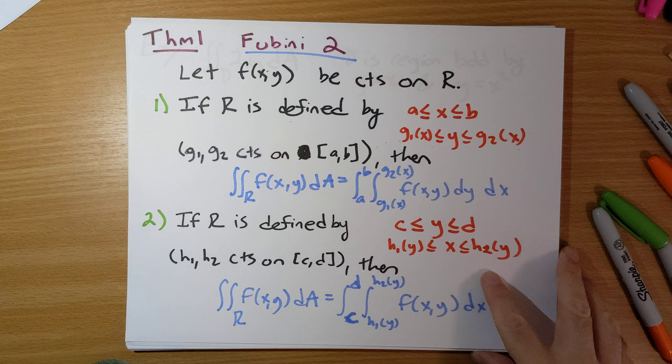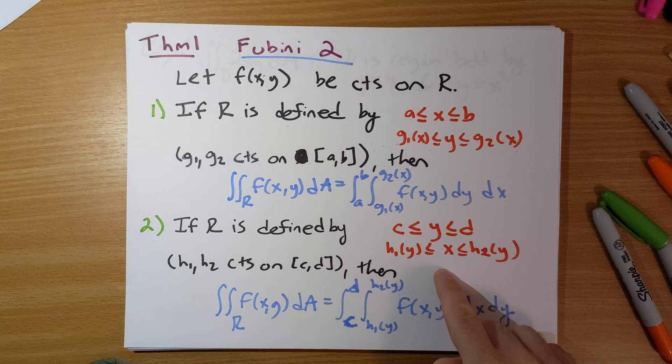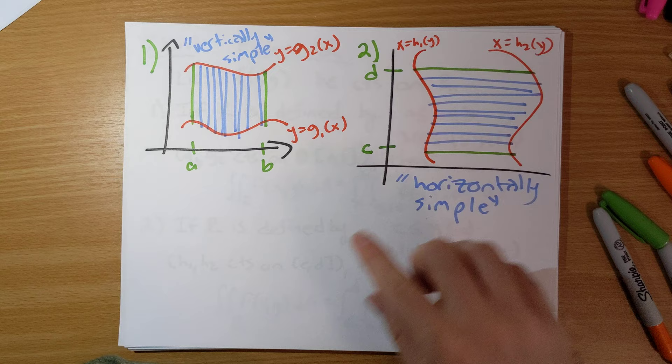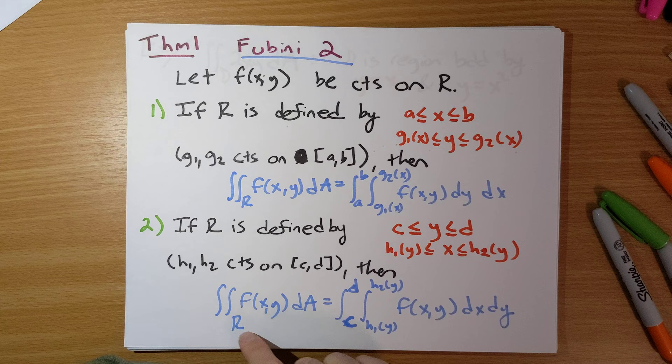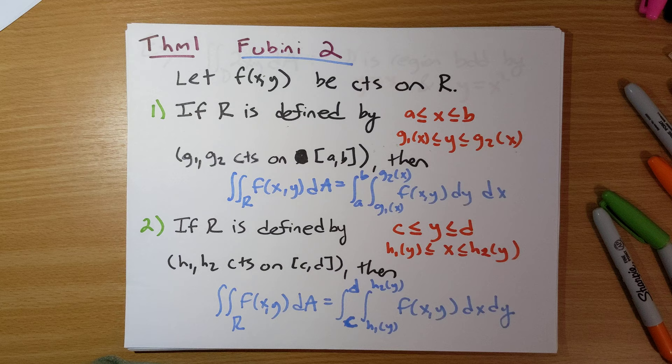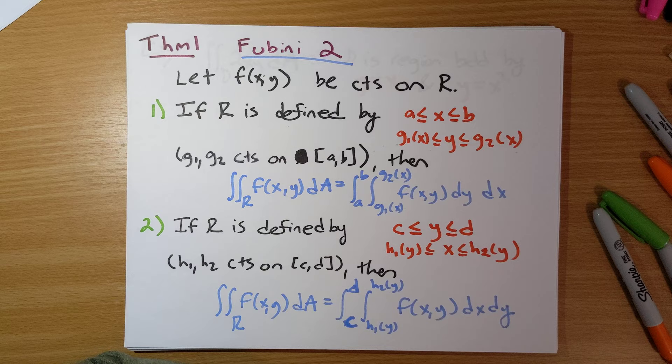Case two: if R is defined by y running from c to d, and for a fixed value of y, x runs from h₁(y) to h₂(y), then the double integral of f over R equals the integral with y from c to d and x from h₁(y) to h₂(y) of f(x,y) dx dy. This is our main way to compute double integrals over these more general regions.